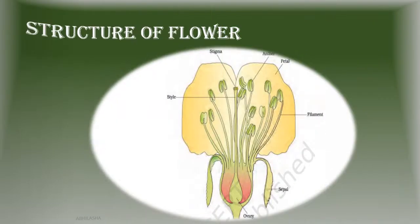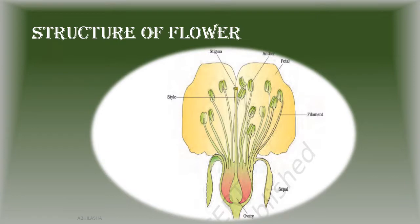Now, this is the structure of a flower with basic parts that you have been studying. Before proceeding further, take a deep look at this picture, turn around and try to draw a flower with all the labeled parts. See how many you can label.